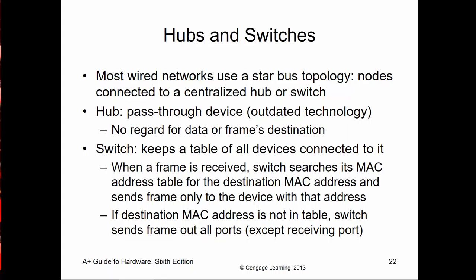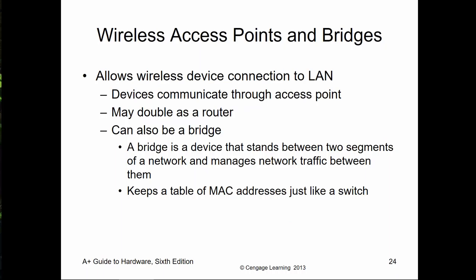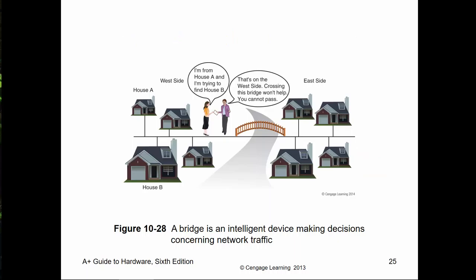We have hubs and switches. Switches are a smart hub; a hub is a dumb switch. It allows us to have a centralized connected device, and the device handles communication to all nodes plugged into it. Everything plugs into the hub or switch and that device manages communication between everything. We also have a wireless access point and wireless bridge, which allow a connection point for wireless signals. In order to have our wireless connect to our wired LAN, we'll have a wired access point that receives wireless signals. A bridge connects different LANs.